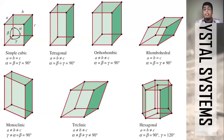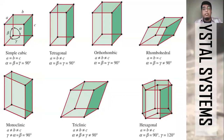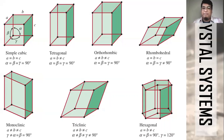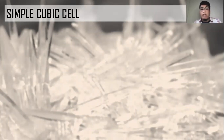It is worth noting that some books refer to these as the lattice system or crystal family. These terms are essentially synonymous — crystal system, lattice system, and crystal family all refer to the same classification.